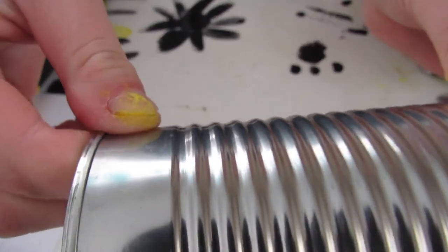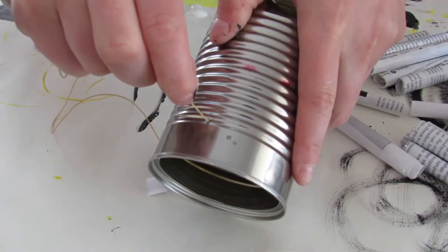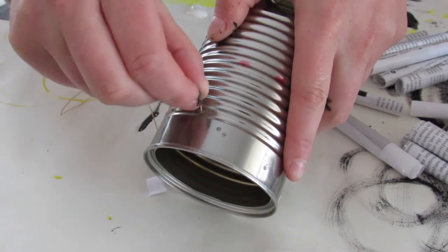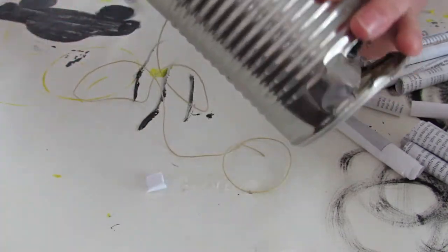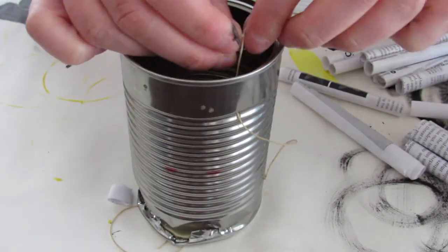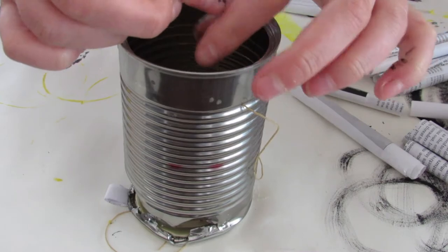You're going to take your string, you're going to cut a decent length and poke the string through the tiny hole that you made and tie about one or two knots. That way it stays secure when you do hang it up. Here's the first one, and then I'm just going to tie one more knot.